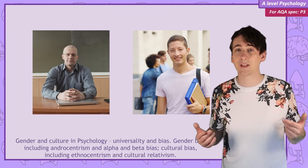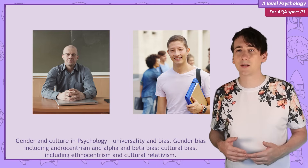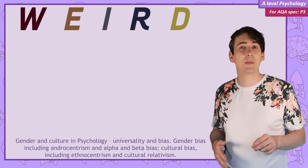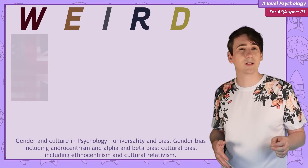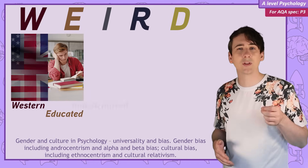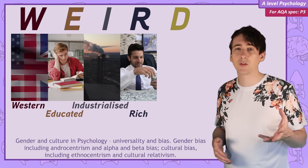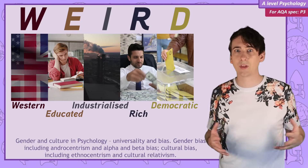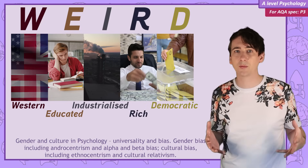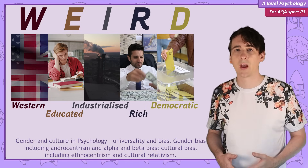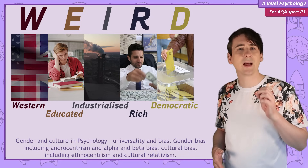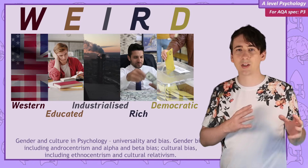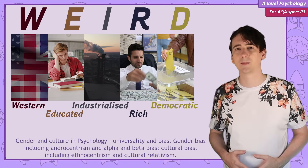And those participants in the studies? Well, it turns out that they're weird. By that I mean they're mostly Western, highly educated, from industrialised nations, richer than most, and from democratic societies. So not like the vast majority of the world's people. So let's look a little deeper at two particular sources of bias in psychology: gender and culture bias.